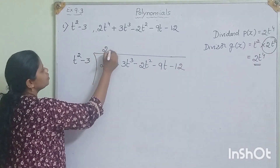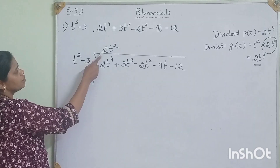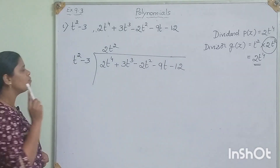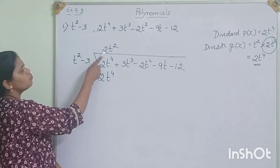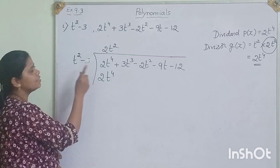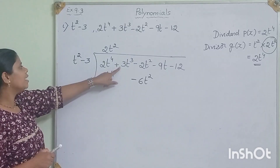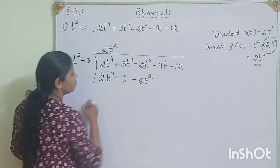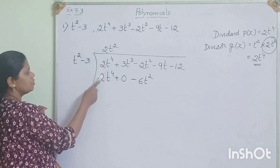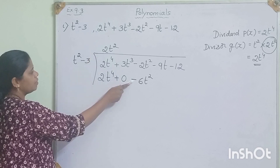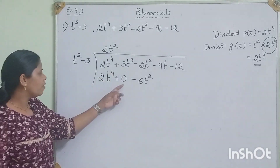We have to multiply by 2t². So: plus into plus is plus — t² × 2t² = 2t⁴. Minus into plus is minus — 3 × 2t² = 6t², so minus 6t². The t cubed term is missing, so we write 0 there. Now in division we subtract, so we change the sign: plus becomes minus and minus becomes plus.